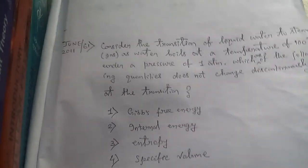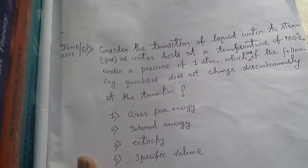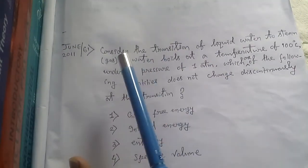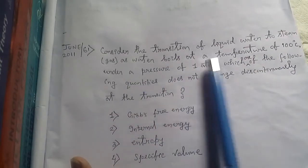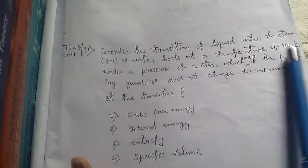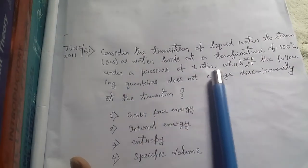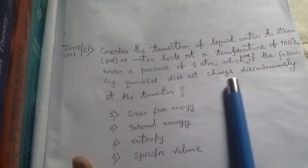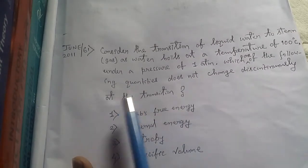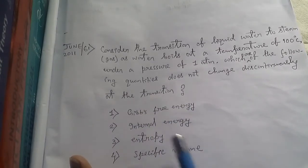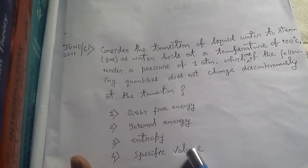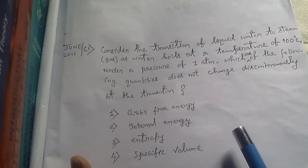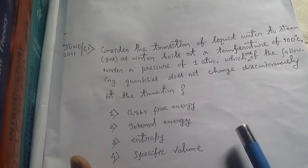Hey friends, this is Vidhan, welcome to my channel. Today we have a problem from June 2011, question number 61. It says: consider the transition of liquid water to steam as water boils at a temperature of 100 degrees Celsius under a pressure of one atmosphere. Which one of the following quantities does not change discontinuously at the transition? The options are: Gibbs free energy, internal energy, entropy, and specific volume. This problem talks about a phase change.